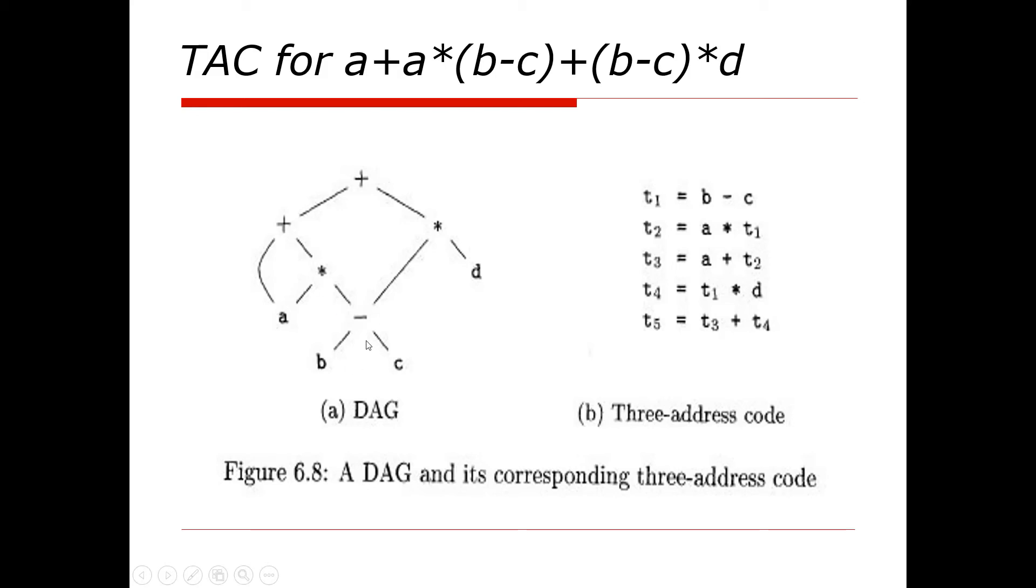This total thing, that means a*(b-c), will be added with a. We already know that a*(b-c) is t2. Now t2 is added with a, so we gave t3 = a + t2. We have already completed this part.